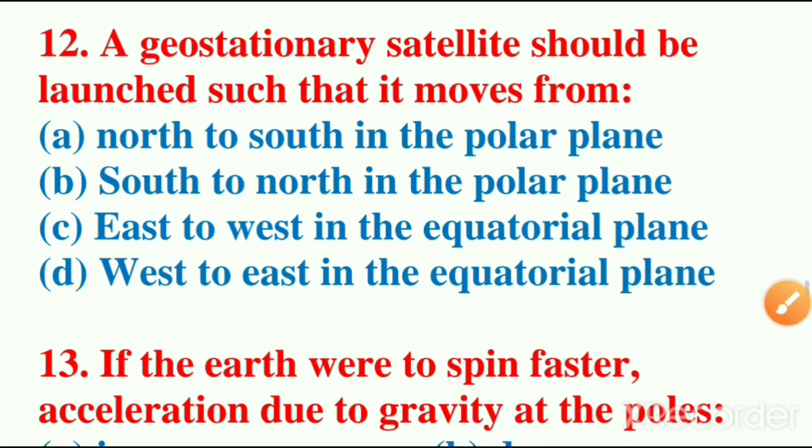12th question: a geostationary satellite should be launched such that it moves? From north to south in the polar plane, south to north in the polar plane, east to west in the equatorial plane, west to east in the equatorial plane. So the correct answer is west to east in the equatorial plane, option D.